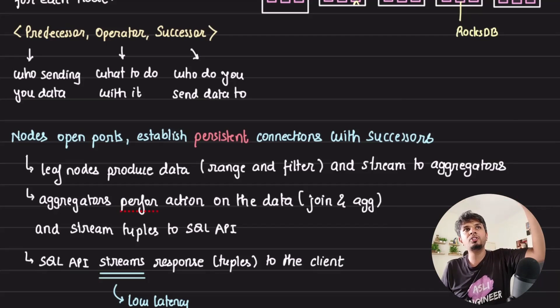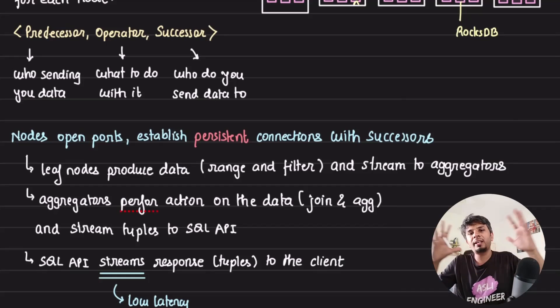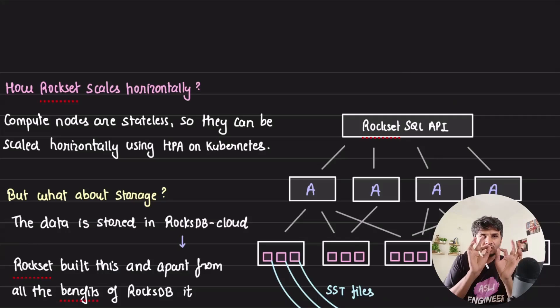These persistent connections play a very important role in seeing a continuous stream of results being streamed to the client, giving the client a great user experience. Now the client is getting a stream of data or stream of tuples, which means it can initiate its processing rather than waiting for the entire result to be computed. Very interesting design decision.